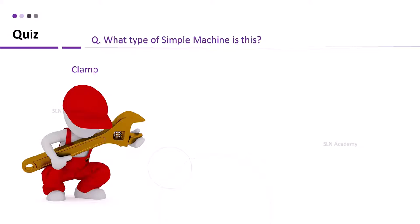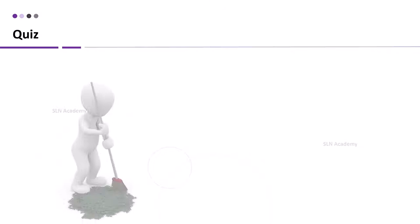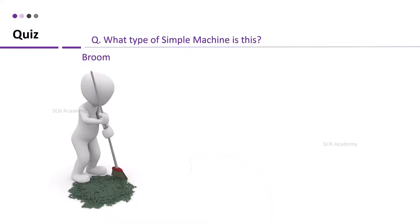Clamp, what type of simple machine is this? And the answer is clamp is a screw. Broom, and the answer is broom is a lever. Fulcrum is in the middle. Effort and resistance are at the ends. So it is a class 1 type of lever.